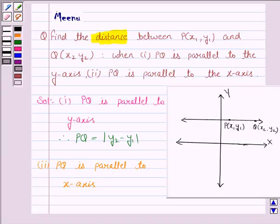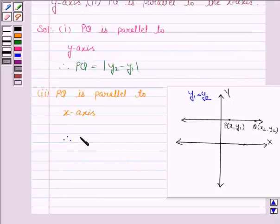Now we see that when PQ is parallel to the x-axis, every point on this line has the same ordinate. That is, y1 equals y2. The value of y does not change on a line parallel to the x-axis. So the distance between the points P and Q is just the difference of x2 and x1. That is, PQ equals mod of x2 minus x1.